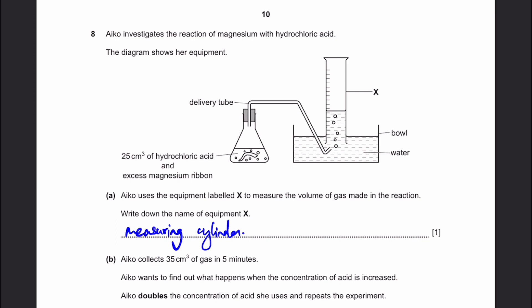Question 8. Ico investigates the reaction of magnesium with hydrochloric acid. The diagram shows the equipment. Ico used the equipment labeled X over here to measure the volume of gas made in the reaction. Name the equipment X. Before I say this, although yes is written here, I just want to explain the experiment a bit. The experiment is to try finding out how much volume of gas is produced by the reaction. So 25 cm³ of hydrochloric acid and excess magnesium ribbon is added to a conical flask with a cork on top, with a delivery tube extending to it. The gas produced will go through and it will collect inside this part, part X.